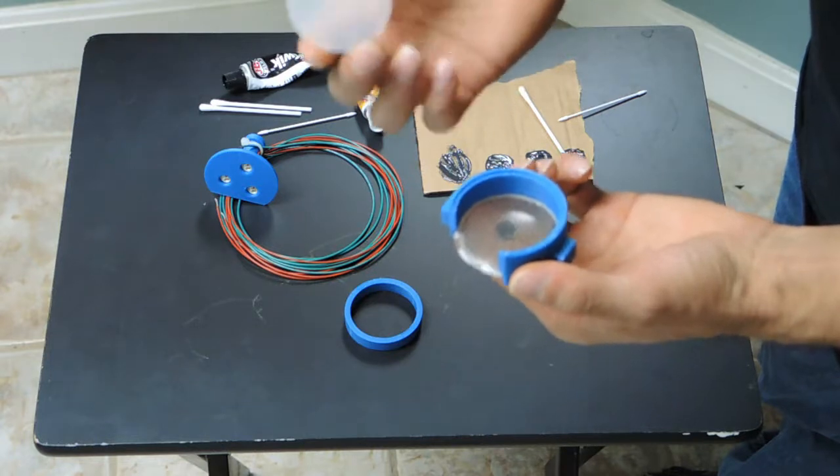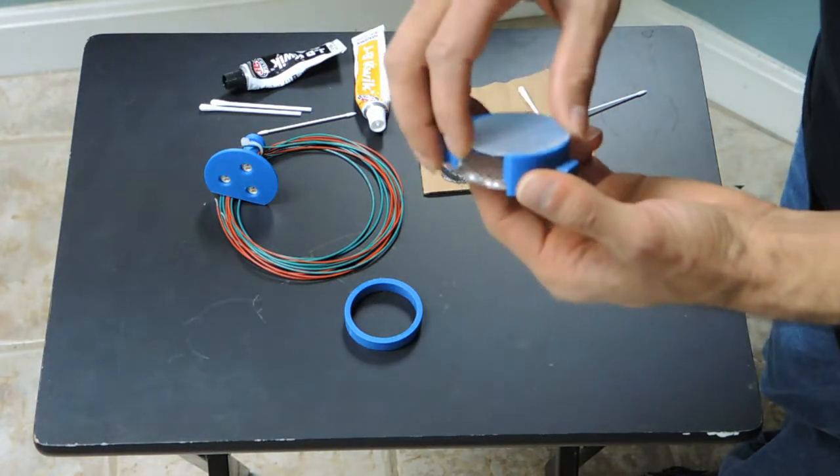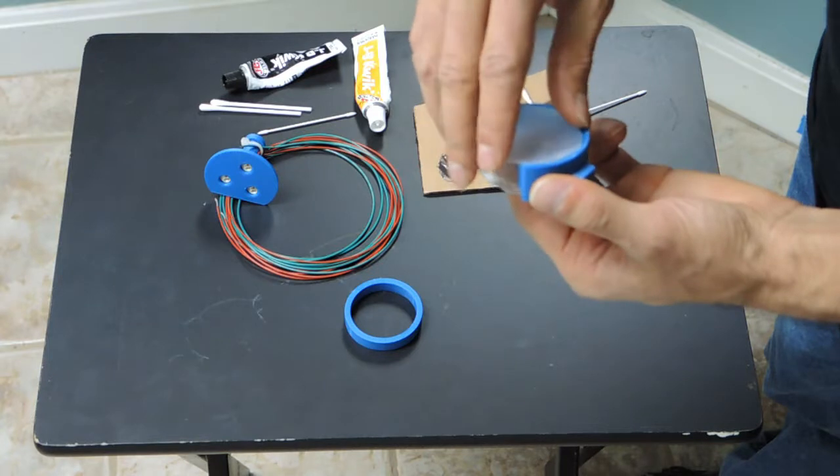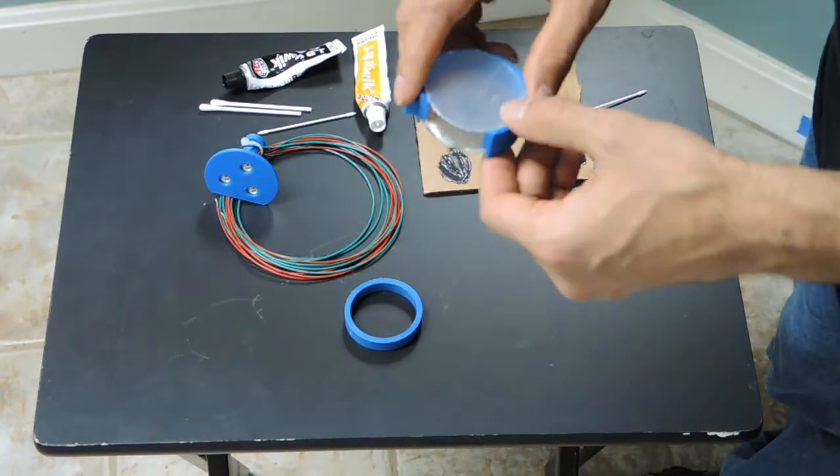So the diffuser will be kind of pressed into the housing and then we're going to apply some epoxy to hold it in place.